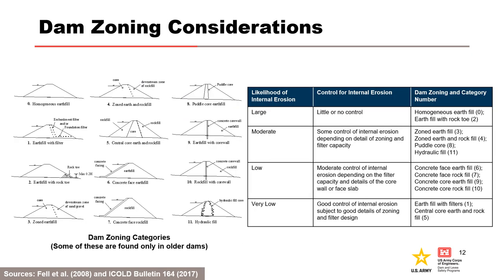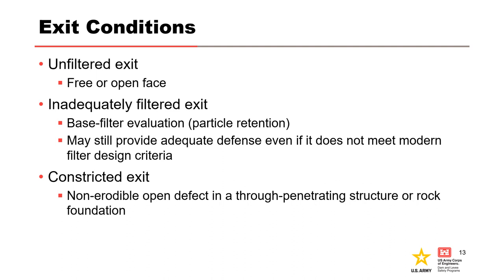Dam zoning can be grouped based on their capability of providing control for internal erosion in the embankment, based on the provision for, or lack of, filters and statistics of failure and incidents in Foster et al. 2000. When evaluating continuation, three types of exit conditions are generally considered: an unfiltered exit is a free or open face; an inadequately filtered exit may still provide adequate defense even if it doesn't meet modern filter design criteria; and a constricted exit, where internal erosion occurs through a non-erodible, open defect in a through-penetrating structure or rock foundation.